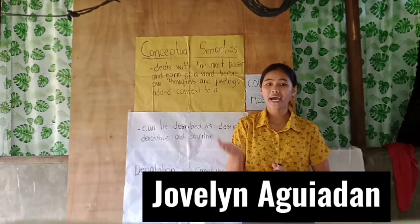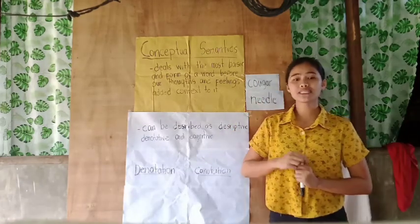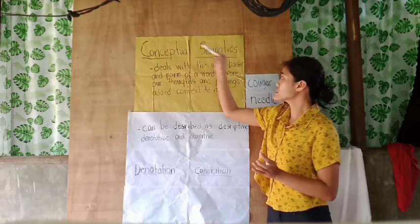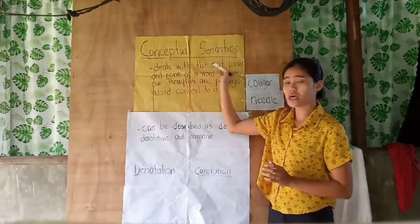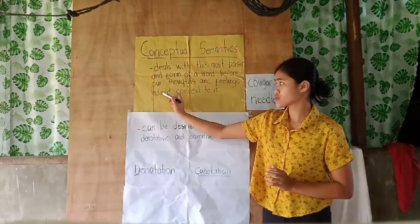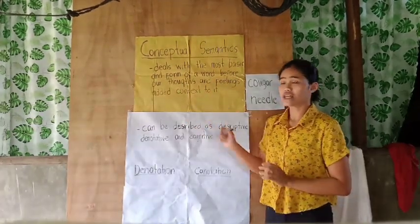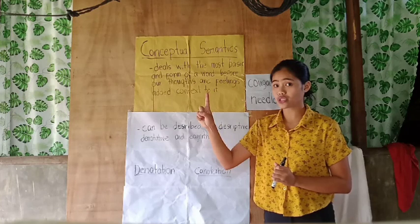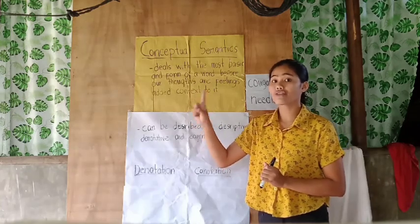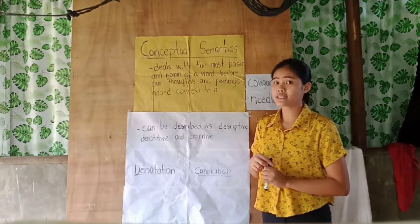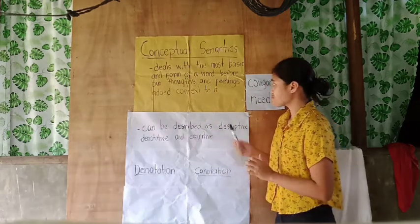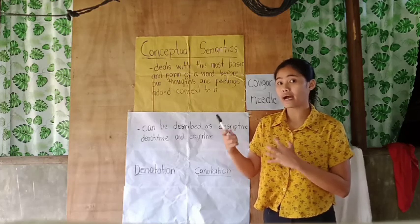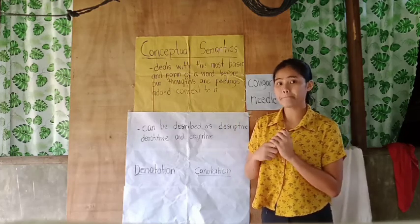Good day everyone. My name is Jovelin Imagyadan and I am going to discuss one of the types of semantics: conceptual semantics. Conceptual semantics deals with the most basic form of a word before our thoughts and feelings add context to it. When we say conceptual semantics, we talk about the primary concept — the general, abstract ideas about the meaning of each word. Conceptual semantics is also the study of the cognitive structure of meaning.